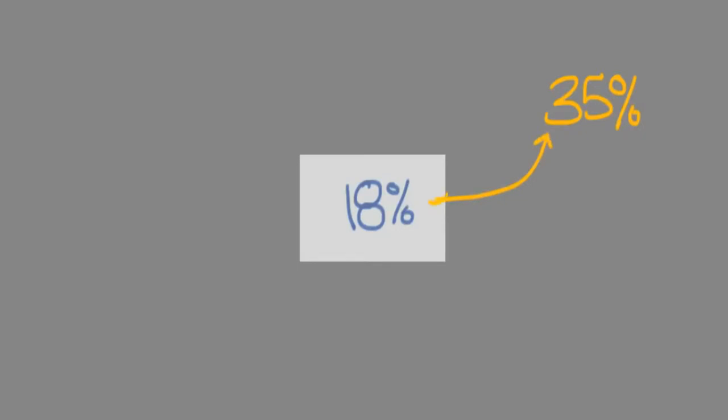If you took the black and white version of the image and threw it in a paint mixer, the result would be 18% gray if your meter had its way. But sometimes that doesn't match reality. In reality, this scene had a lot of darker and lighter tones, and it actually works out to about 35% gray. That is the problem that metering and exposure create for photographers — your camera wants to make 18% gray, but your photo is actually about 35% gray, so you need to trick your camera into exposing correctly.